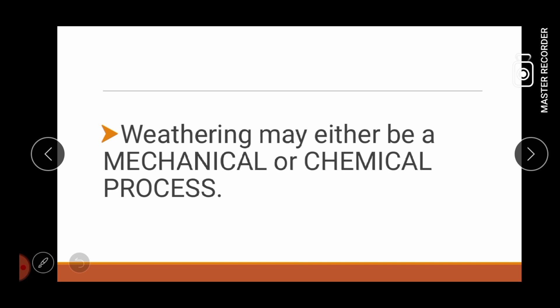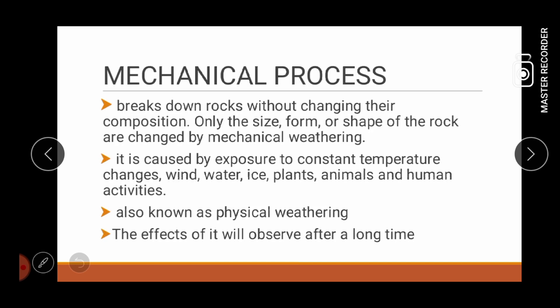Weathering may either be a mechanical or chemical process. When we say mechanical process, it breaks down rocks without changing their composition. Only the size, form, or shape of the rock are changed by mechanical weathering. It is caused by exposure to constant temperature changes, wind, water, ice, plants, animals, and human activities.